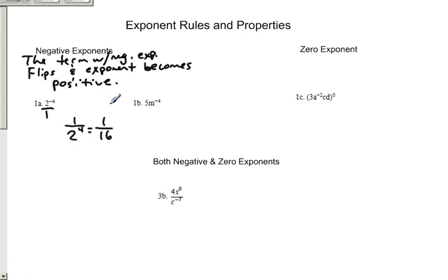Now, the problem is, in one like 1b, when you have 5m to the negative 4th, the only thing that has a negative exponent is that m to the negative 4th. So, the only thing that flips is the m to the 4th. The 5 stays put because, really, the 5 has its own exponent of 1, which is the only thing that affects that 5. It's not being affected by that negative 4th.